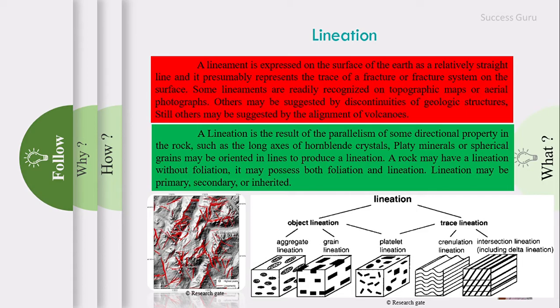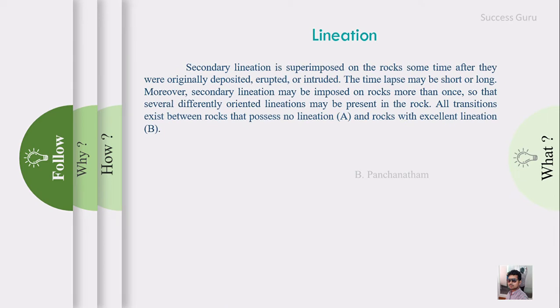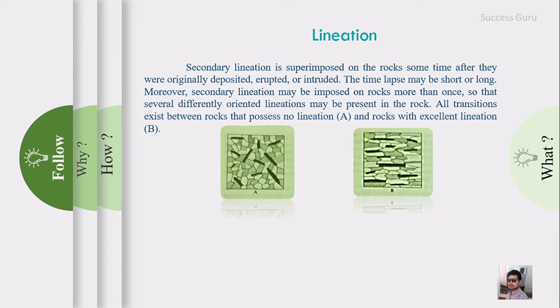As we are dealing with structural geology, our primary interest is in secondary structures. Secondary lineation is superimposed on the rock sometime after they were originally deposited, erupted, or intruded. The time lapse may be shorter or longer. Moreover, secondary lineation may be imposed on a rock more than once so that several differently oriented lineations may be present. All transitions exist between rocks that possess no lineation to rocks that show excellent lineation. You can see two images here, A and B, showing these two extremes - a rock without lineation and one with excellent mineral orientation.